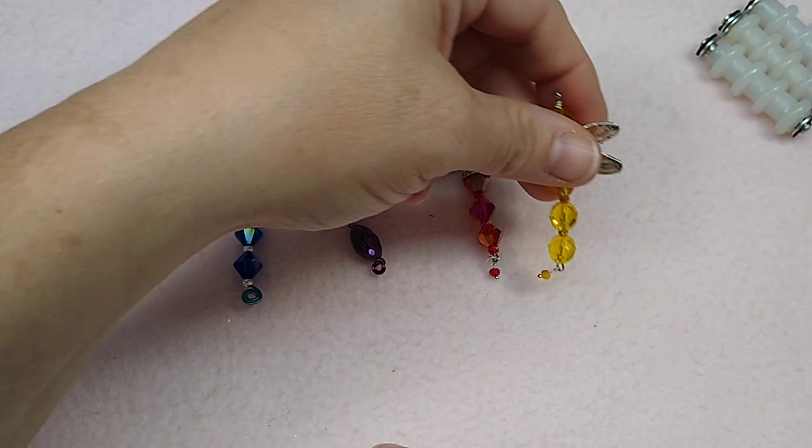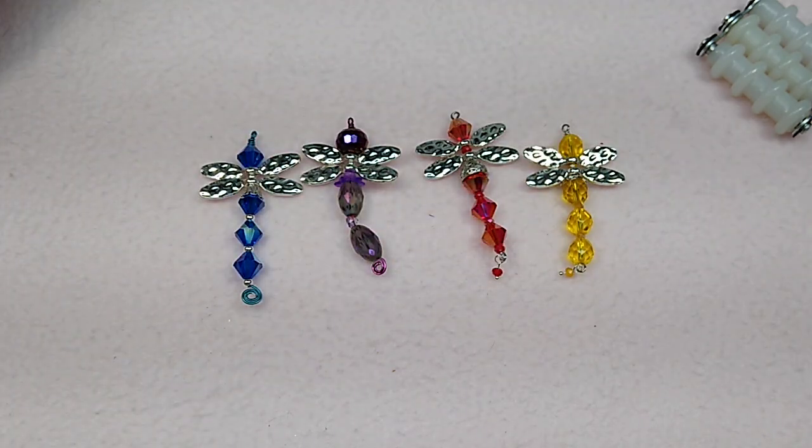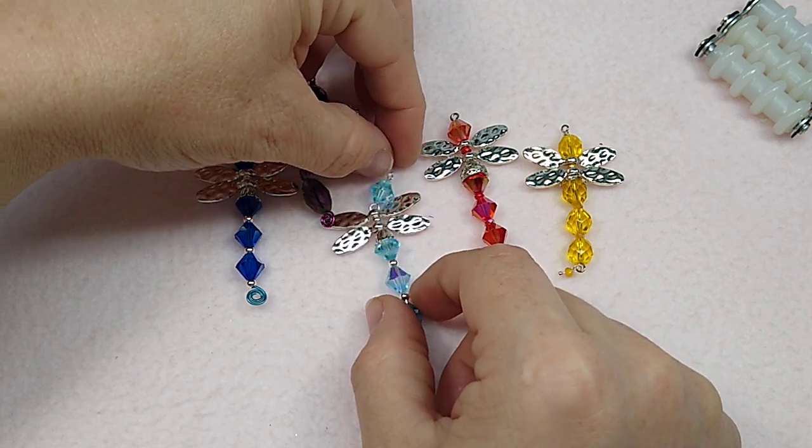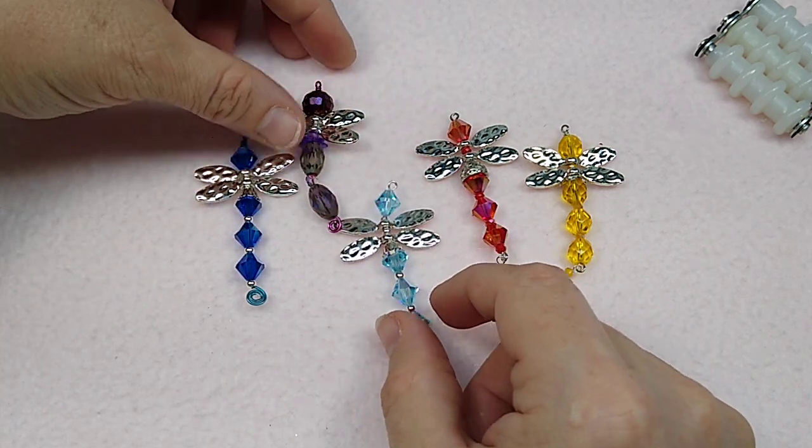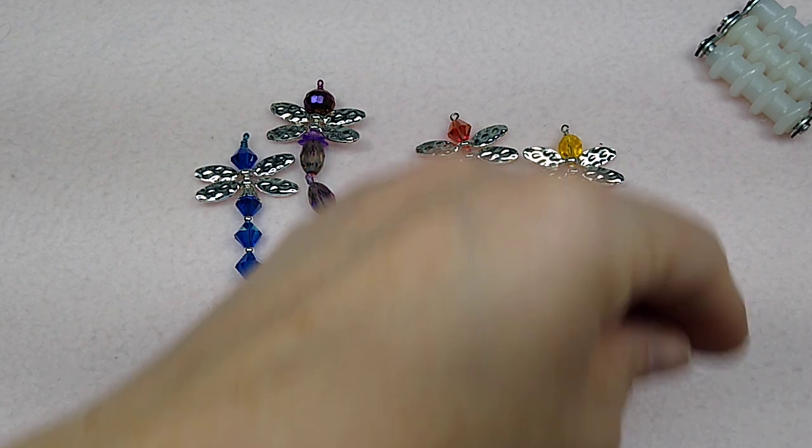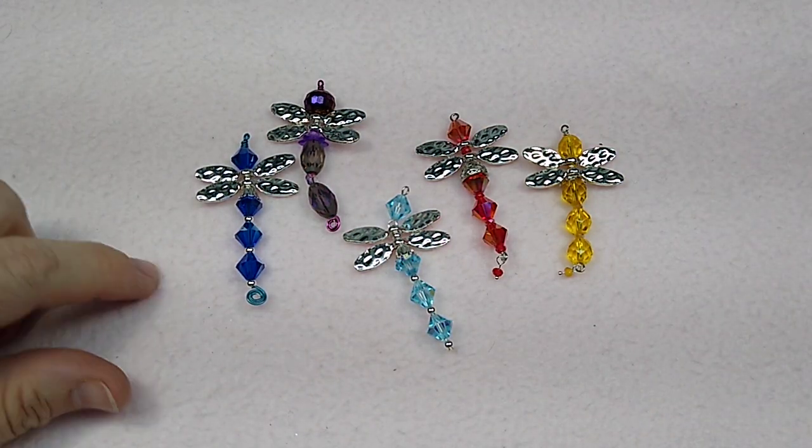Here's the yellow one. And, excuse me. Here's the aqua one with the dangly head. So there are five little versions of these dragonfly pendants that you can make.